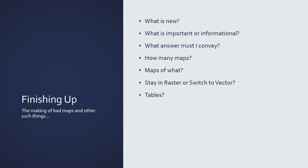Finishing up the making of maps really comes down to asking yourself a series of questions as you start this process: What's new? What is important or informational in terms of what you're going to show? How are you going to answer the question that was asked? How many maps do you need? What are you going to map? Are you going to stay in raster or switch to vector? Do you need tables?